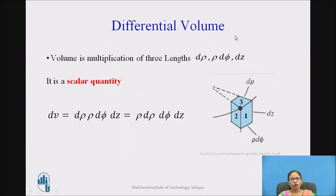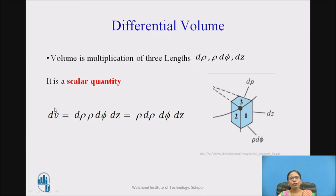Can we write the differential volume? Yes, it is simple. Volume is multiplication of the three differential lengths. The three differential lengths are d rho, rho d phi, and dz. So the differential volume dv is a scalar quantity: dv = rho d rho d phi dz.